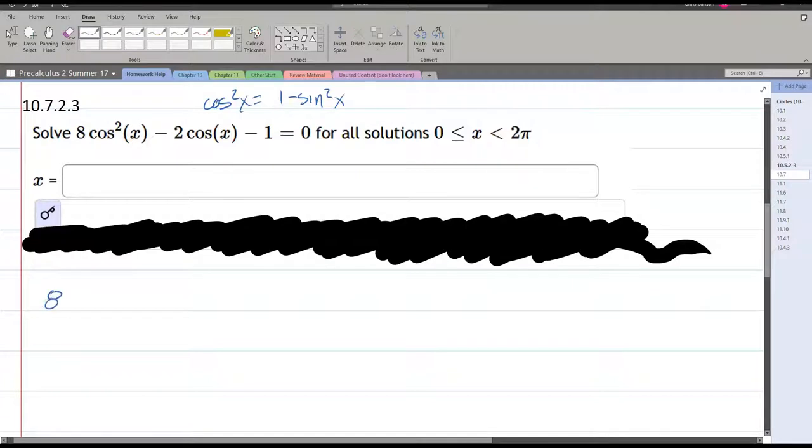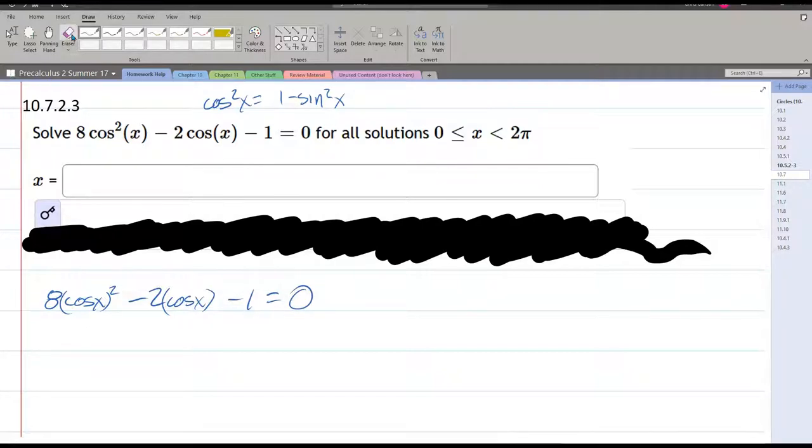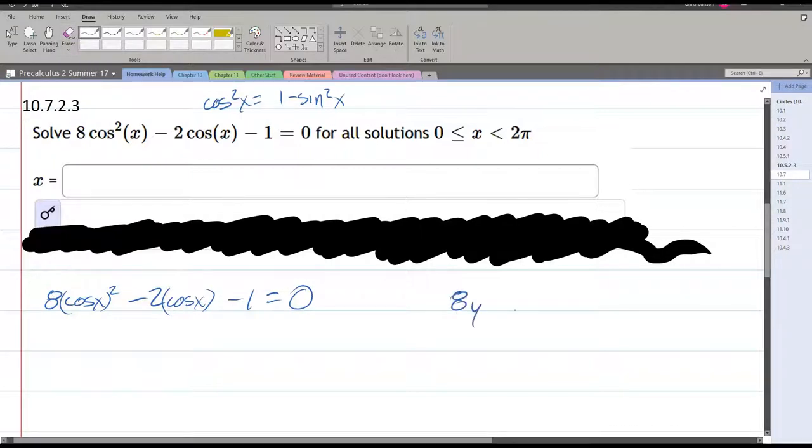Let's go ahead and rewrite this. I'm wrapping these in parentheses. This one's already solved for zero. You're going to find a lot of these are not solved for zero, so you're going to need to solve for zero. You should think of this as 8y² - 2y - 1 = 0, where y equals cos x.